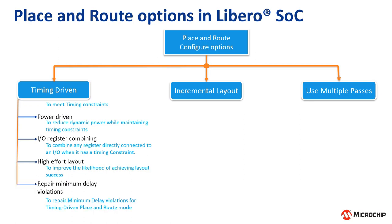The fourth option is repair min-delay violations. This is used to repair the minimum delay or hold violations that occurred in the design. This is done by increasing the length of routing paths and inserting routing buffers to add delay to the violation paths. The tool will try to reduce or completely repair the violations.